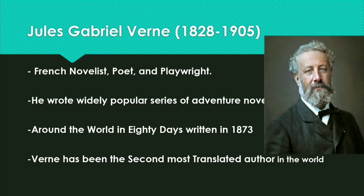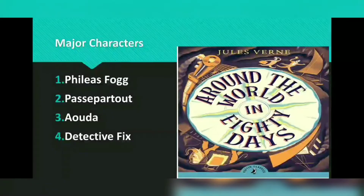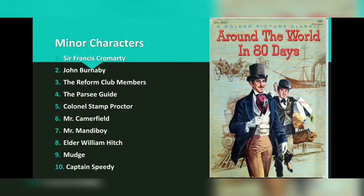'Around the World in 80 Days' is also an adventure novel, published in 1873. Verne is generally considered a major literary author in France and most of Europe, and he has been the second most translated author in the world. The novel has four major characters: the protagonist Phileas Fogg, Passepartout, Aouda, and Detective Fix, plus ten minor characters.